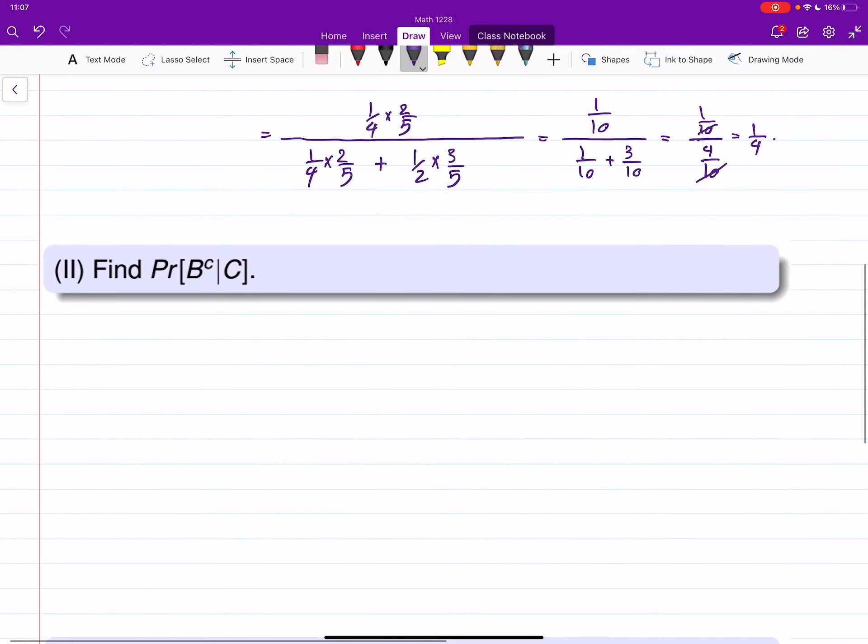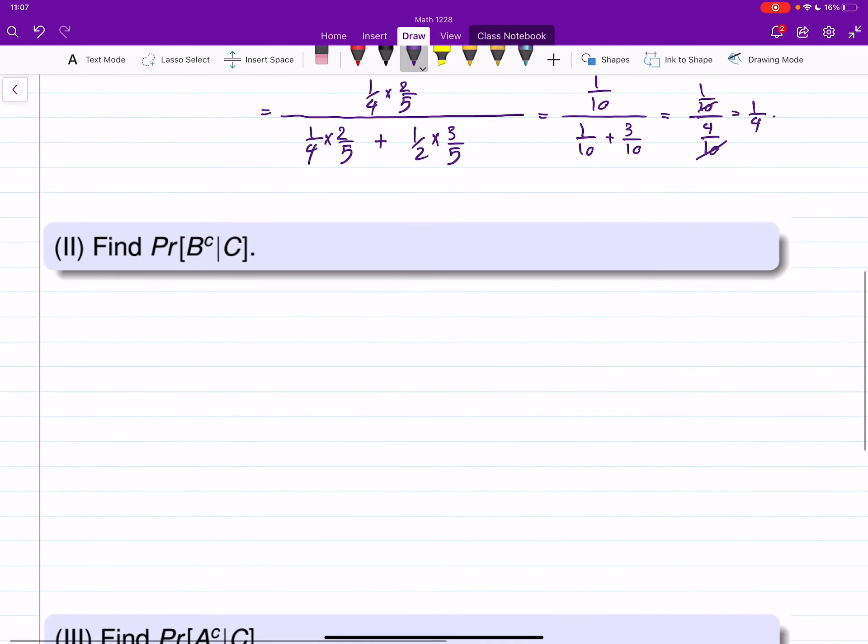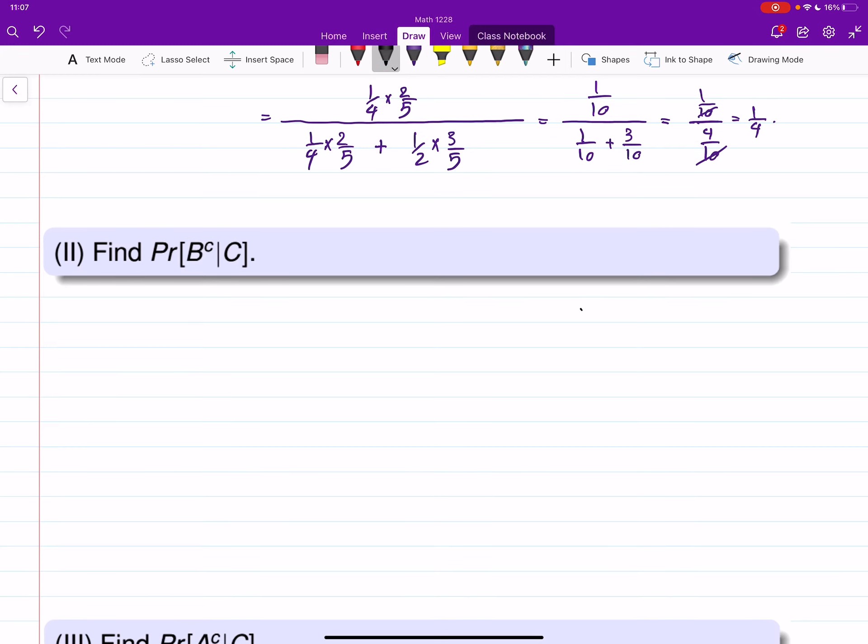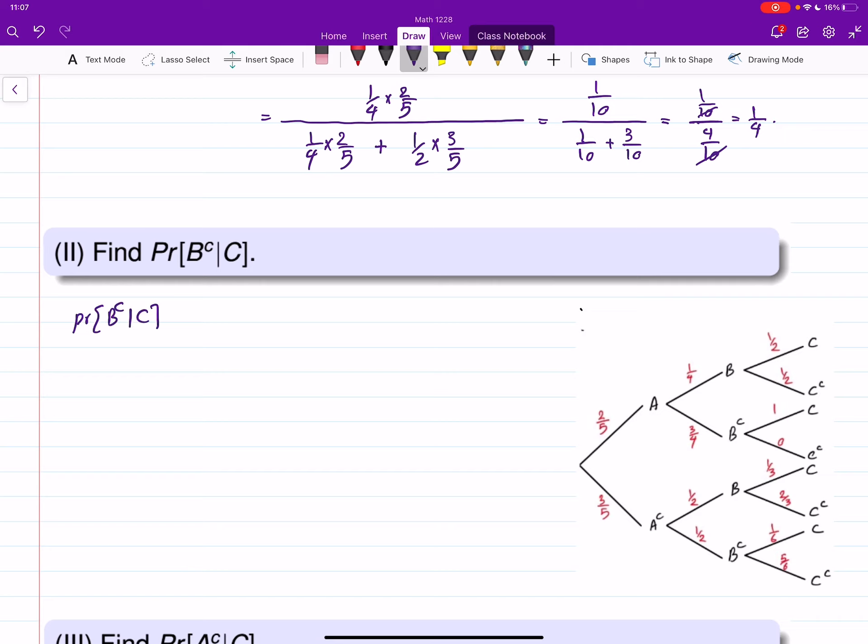Let's do another part. Here we are looking for probability of B complement knowing C. So I will paste the tree here so we can see what's happening. Again, the order of the conditional probability is not the order of the tree. C is in the third level and B complement is in the second one. So that gives me the heads up to go and use the formula for the conditional probability.